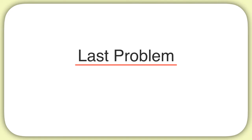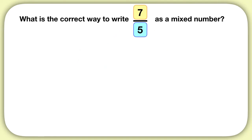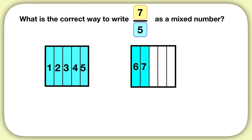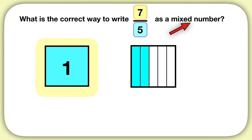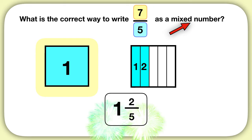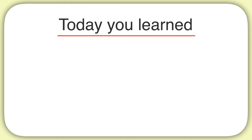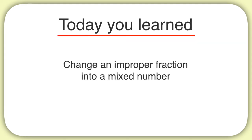Here's your last problem for today. What is the correct way to write 7 fifths as a mixed number? After you drew out 7 fifths, to turn it into a mixed number, just count how many whole squares you have. Here we only have 1 whole square. Then we have 1, 2 fifths more. So our mixed number is 1 whole and 2 fifths. Today you learned how to change an improper fraction into a mixed number.